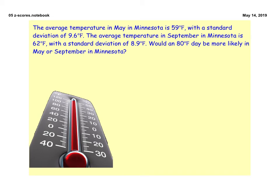So which one would be more likely? So we're going to take 80 as our value. We're going to look at May first. So we have our z-score which would be 80 minus 59 which is our average divided by 9.6.